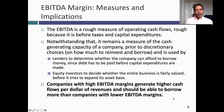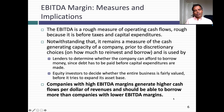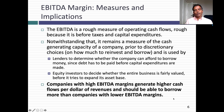EBITDA margin measures how much cash the company throws off as a percent of revenues. This matters because to borrow money, you are committing to pay interest and principal payments in the future, for which you need cash flows. Companies with high EBITDA margins have much greater capacity to generate cash from the business, and that cash can service debt. Big infrastructure businesses often carry high EBITDA margins and significant debt. EBITDA margins measure the cash profits you throw off as a business.